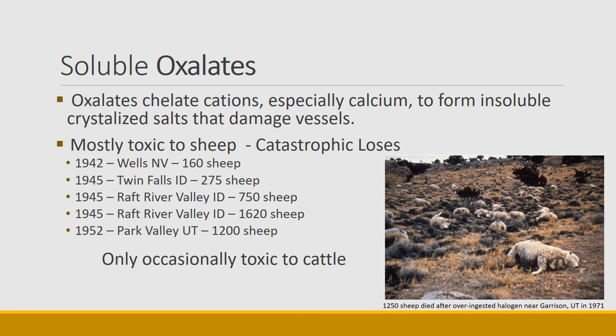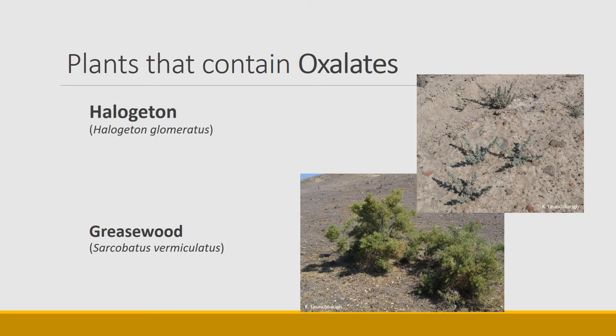Oxalates are the reason we study them — they can be really deadly, and much more deadly to sheep than cattle. Many plants in the salt desert contain oxalates, ranging from just a few percent to up to 30% of the biomass being composed of oxalates. The most dangerous one is halogeton — a slow-growing annual plant introduced to the Great Basin, found commonly throughout the basin especially in disturbed sites. Greasewood is also a plant that can accumulate oxalate; it's a native shrub found in the Great Basin.